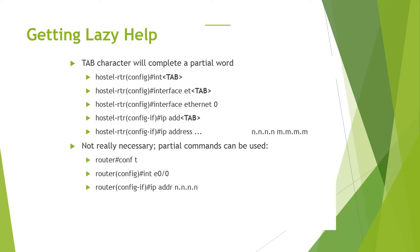Getting lazy help: the Tab key will complete a partial word. For example, type 'hostel-rtr(config)# int' then Tab to get 'interface'. Then type 'et' and press Tab to complete to 'ethernet 0'. This is the Tab completion feature of IOS.